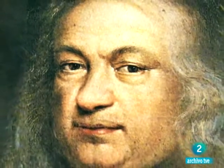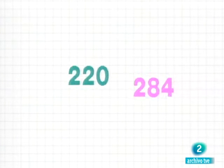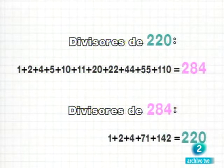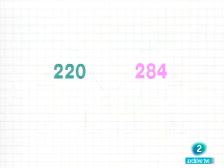Con esta mente para los cálculos, Euler no podía dejar de responder a los retos del matemático francés Fermat, planteados un siglo antes. Los pitagóricos ya habían observado una rara relación entre los números 220 y 284. Si sumamos todos los divisores de 220, obtenemos 284, el segundo número. Y si sumamos los de 284, obtenemos el primero, 220. Los llamaron números amigos.